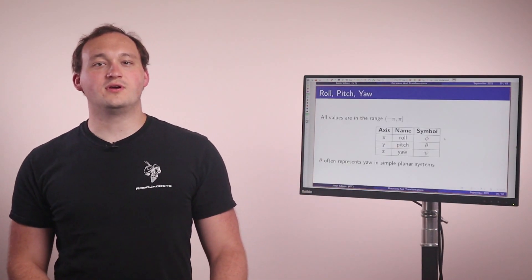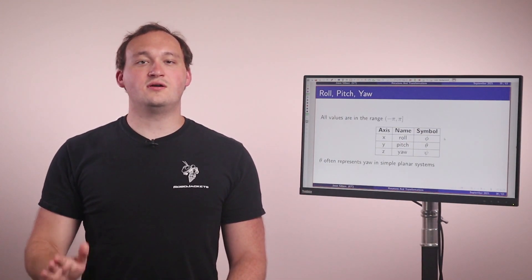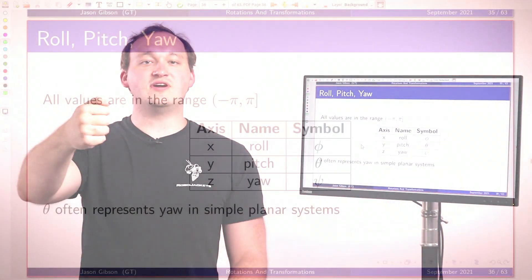The first rotation is roll, a rotation around the x-axis denoted by phi. The second rotation is pitch, a rotation around the y-axis denoted by theta. And the third rotation is yaw, a rotation around the z-axis denoted by psi.